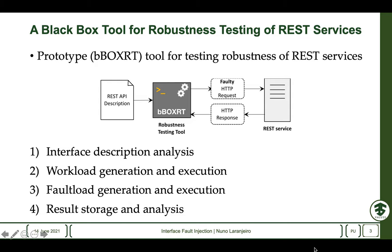So if a service is expecting an integer, we inject things like the maximum value for an integer, or maximum plus one or minus one, or special values like zero, one, minus one. If we have the domain of that parameter, we explore the limits of the domain. If the data type is a string, we do similar mutations like overflowing the maximum size of the string, or setting the string to null or to empty. These are essentially rules that we apply depending on the data type of the arguments inside the request to the service.